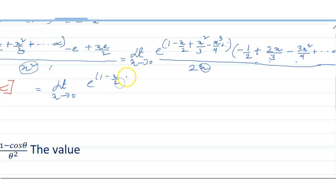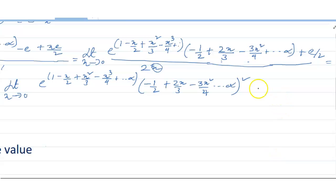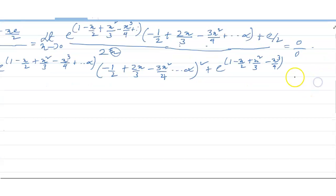I apply L'Hôpital again to get limit x tends to 0 of e to the power (1 plus x squared by 3 minus x cubed by 4, up to infinity), multiplied by minus half plus 2x by 3, minus 3x squared by 4 up to infinity, whole squared. Plus e to the power (1 minus x by 2 plus x squared by 3 minus x cubed by 4), applying the product rule, times 2 by 3 minus 6x by 4.